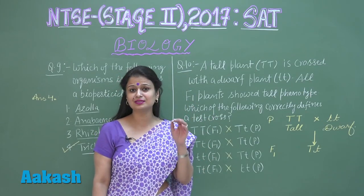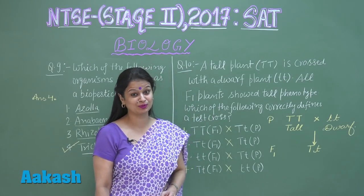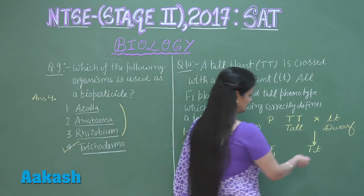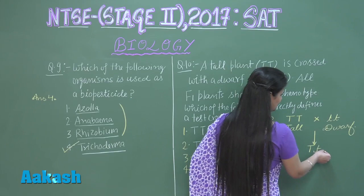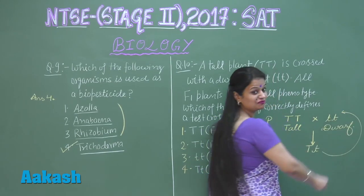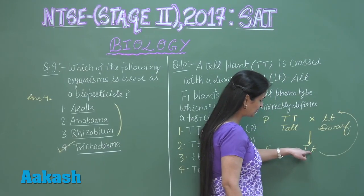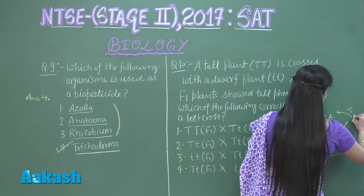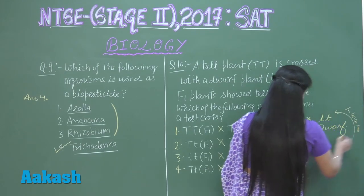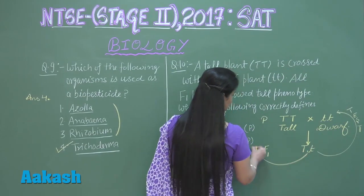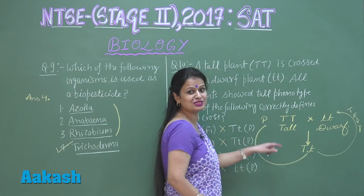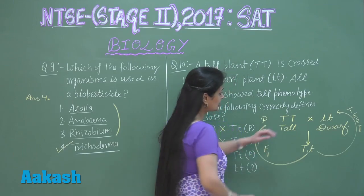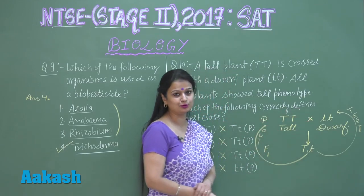The test cross is a very important cross performed by Mendel. In a test cross, the F1 hybrid is crossed with the recessive parent. If the F1 hybrid is crossed with the homozygous dominant parent, that is called an out cross. The test cross and the out cross are the two types of back crosses.